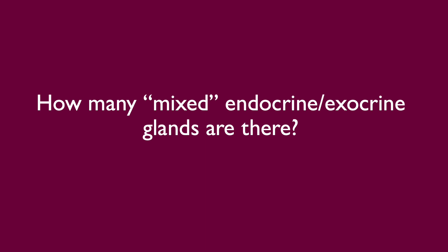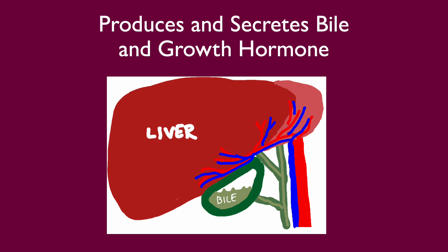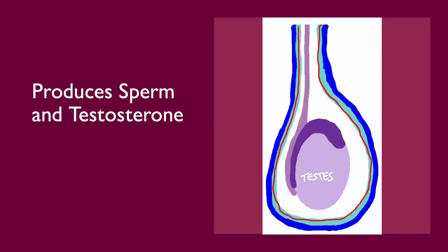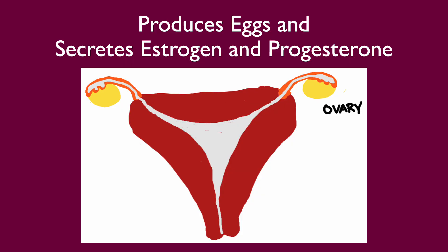How many mixed endocrine and exocrine glands are there? The liver produces and secretes bile and also gives growth hormone into the blood. The testes produce sperm, which is considered a merocrine exocrine function, and it is also producing testosterone. The ovaries produce eggs, and eggs are released into a duct — this represents its exocrine function. The endocrine function is the release of progesterone and estrogen.